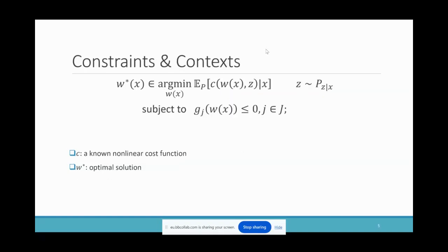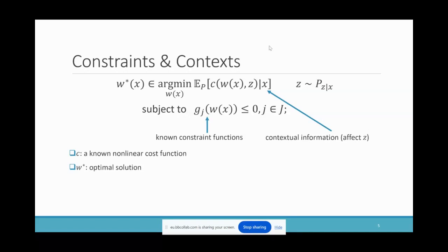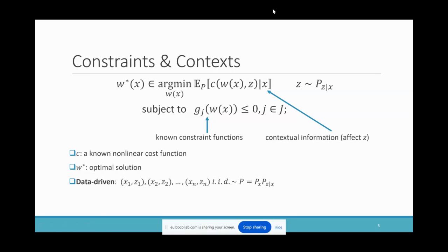This form can also be generalized in two ways. First, the constraint case, where we have some deterministic constraints on the decision consisting of known functions G_j on W. Second, the contextual case, where we have additional contextual information X that affects the distribution of Z. Given X, Z is conditionally distributed according to an unknown ground truth distribution P(Z|X). We only have access to data (X_i, Z_i) that are i.i.d. drawn from the joint distribution of X and Z.